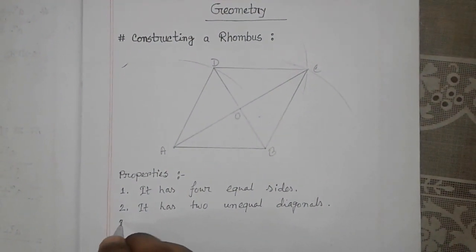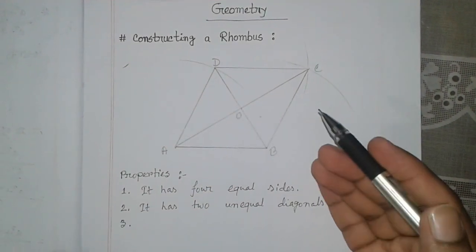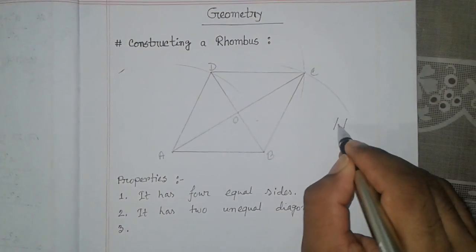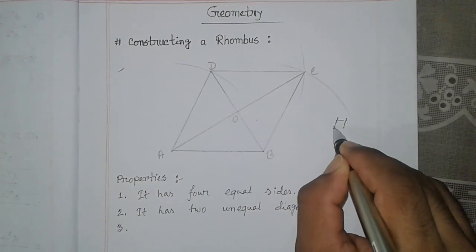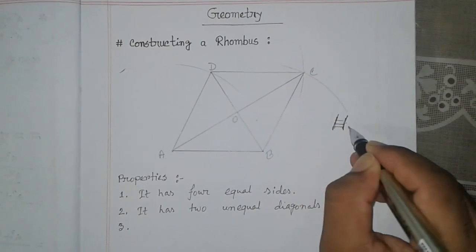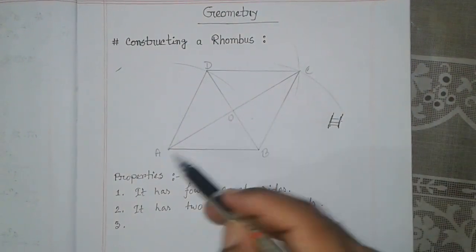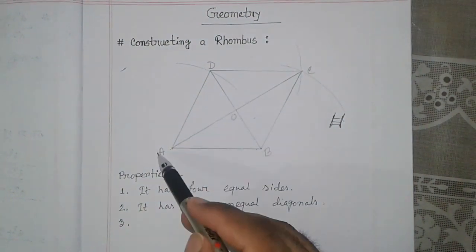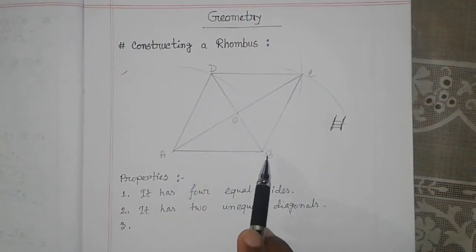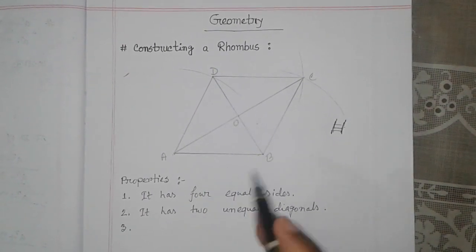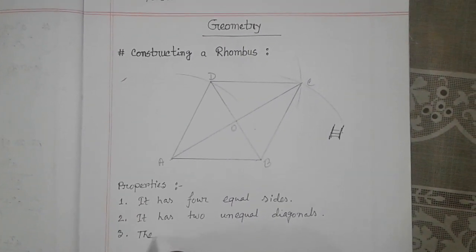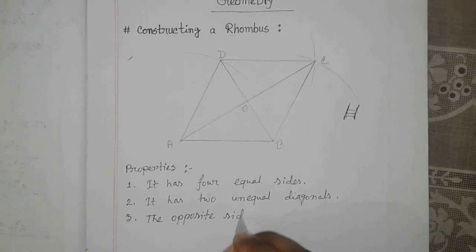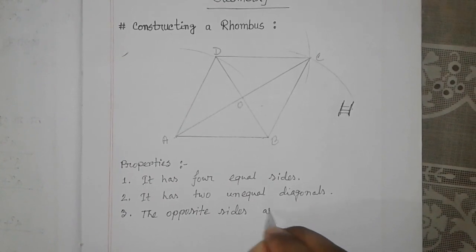Number three: the opposite sides of the Rhombus. If you have an idea about the parallelogram, you know what parallel lines are. When two lines maintain equal distance from each point to another, those lines are called parallel lines. So AD and BC, and also CD and AB — the opposite sides are parallel. So we can write: the opposite sides of the Rhombus are parallel.